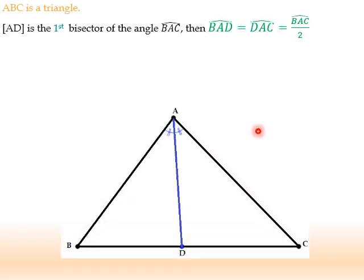If we look together at this triangle ABC and we draw AD, the first bisector of angle BAC. Okay, when we talked about median, we said that median is a segment that is issued from a vertex to the midpoint of the opposite side. Okay, we talked about the midpoint of the side.